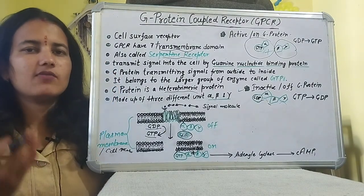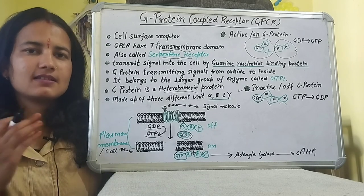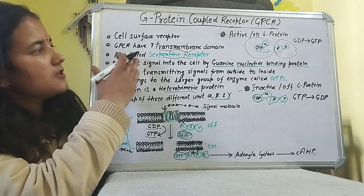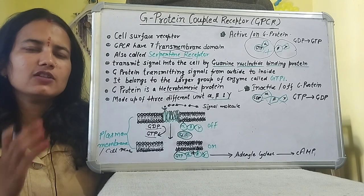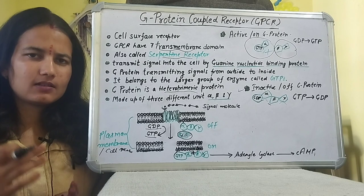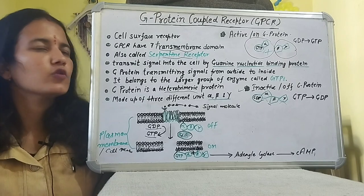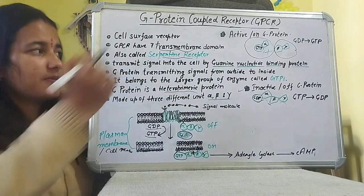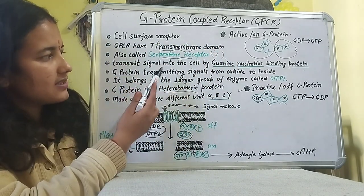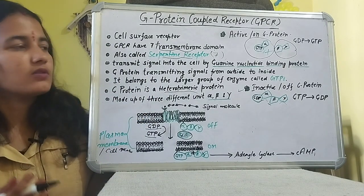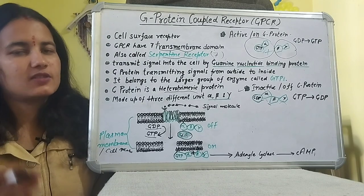GPCR is a cell surface receptor, meaning the receptor is present on the cell surface. GPCR has seven transmembrane domains, which cross the plasma membrane or cell membrane seven times. This is why we also call it a serpentine receptor.